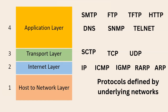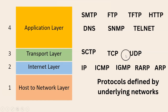The transport layer has three protocols. TCP, Transmission Control Protocol, is the most important protocol in the transport layer, followed by UDP, User Datagram Protocol. The third protocol is SCTP, Stream Control Transmission Protocol.